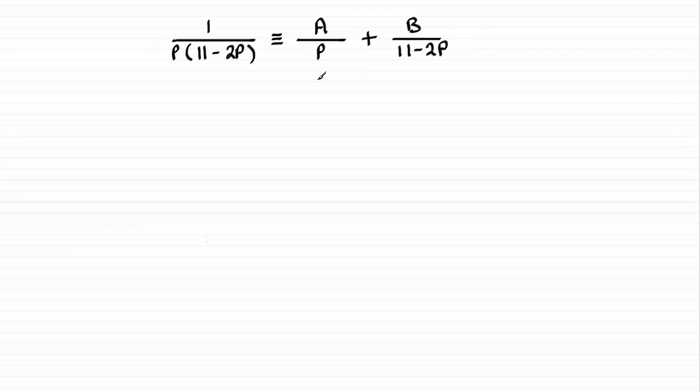Then the next thing I'll do is multiply throughout by what we have here in this denominator, P times 11 minus 2P.